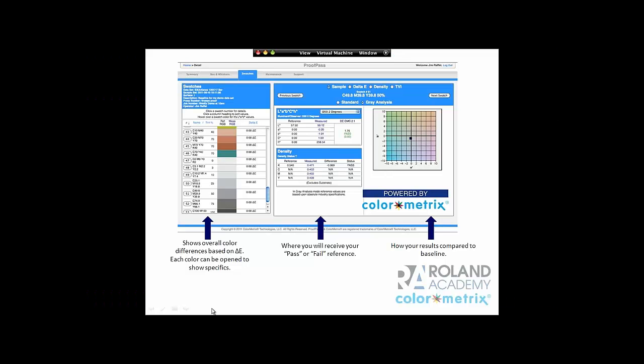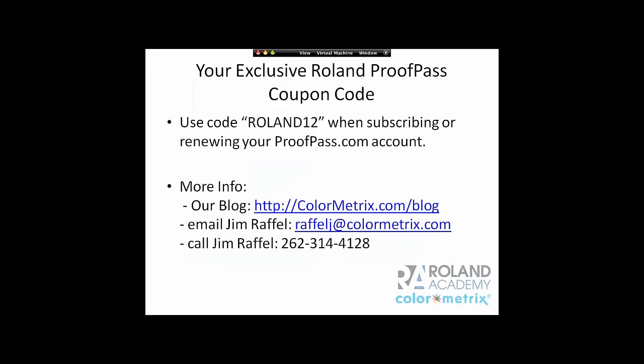So your exclusive code for having attended is just 'Roland' and the number 12, all uppercase. You can go to proofpass.com and by providing your email address and name, you will be emailed a login and password, and you can use ProofPass for free for 30 days. If you're planning to do that but don't already own your i1, you might want to acquire that first. We also have a blog at colormetrics.com/blog where you can find more information on delta E, LAB, and things of that nature. You can also email me anytime at rafflej@colormetrics.com, or call 262-314-4128 if you have questions after the webinar.